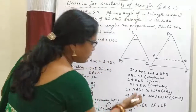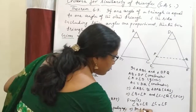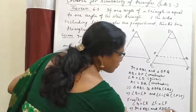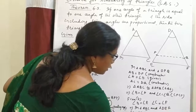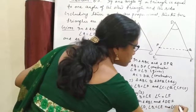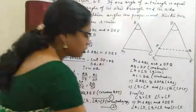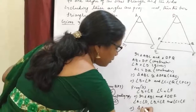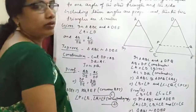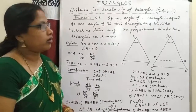From this, it is proved that angle B equals angle E and angle C equals angle F. Previously it is given that angle A equals angle D. So in triangle ABC and triangle DEF, angle A equals angle D, angle B equals angle E, and angle C equals angle F, and the two sides are in the same ratio. This implies triangle ABC is similar to triangle DEF.